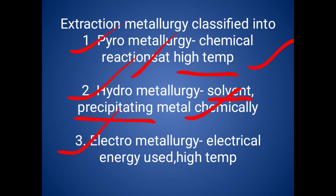In electrometallurgy, we use electrical energy as well as high temperature to eliminate the gangue from the ore. In the engineering field, we mostly use pyro metallurgy — that is, under high temperature, using chemical reactions to eliminate the gangue.